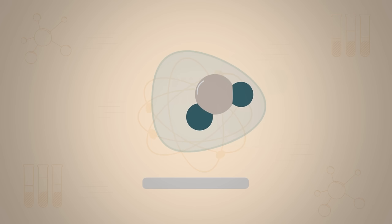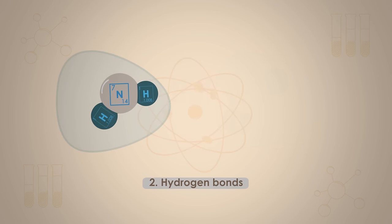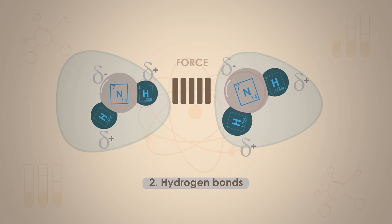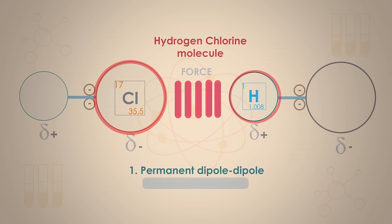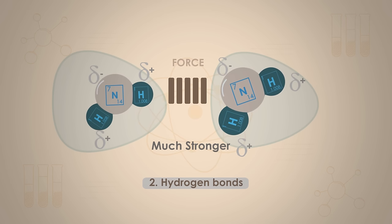The second type of intermolecular force is the hydrogen bond. The permanent dipole in a covalent bond between a hydrogen atom and a fluorine, oxygen, or nitrogen atom is particularly strong. Thus, the attraction between the electron-deficient H δ+ of one molecule and the lone pair of electrons on a fluorine, oxygen, or nitrogen atom of another molecule is much stronger than the permanent dipole-dipole attraction between the two hydrogen chloride molecules. This particular type of attraction is given the special name of hydrogen bond.